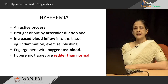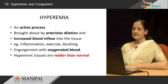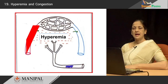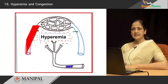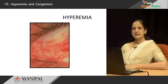The tissue becomes engorged with oxygenated blood brought in by the arteriolar dilatation. Therefore, the affected site will appear reddish in color. In hyperemia, we are seeing increased blood coming into the microcirculation as a result of arteriolar dilatation, and it is occurring by an active process. This is an example where you can see hyperemia or increased blood in the conjunctival tissue in a patient with conjunctivitis, secondary to inflammation.